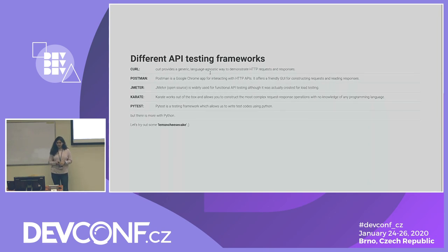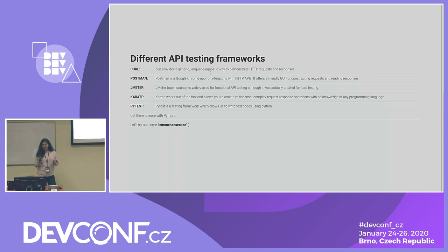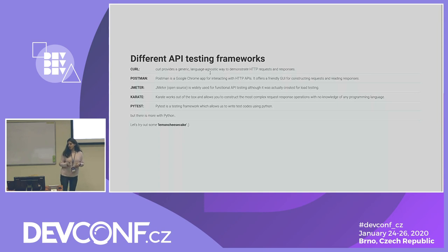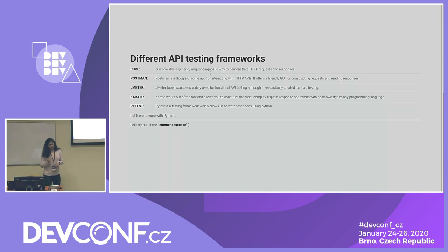Different types of API testing frameworks: the best thing about API testing is that you can do it with any programming language. CURL provides a generic and language-agnostic way to demonstrate HTTP requests and responses. Postman is a Google Chrome app for interacting with HTTP APIs — it gives you a friendly UI for constructing requests and reading responses. JMeter is a widely used open source tool for API testing, though originally created for load testing. Karate is a framework that works out of the box — you don't need prior programming knowledge to write API tests. PyTest is a popular testing framework for Python, but there is more with Python.